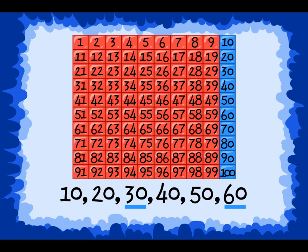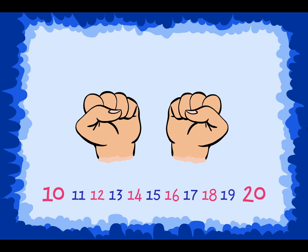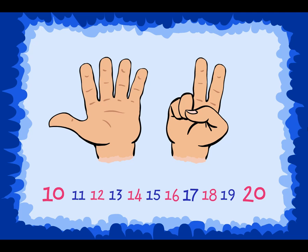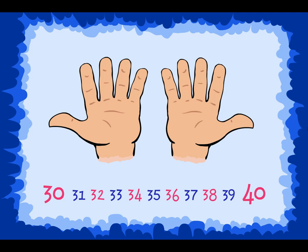When we count by 10's, we skip 10 from the previous number. For example, there are 10 numbers between 10 and 20. Count along with your fingers as I start at 11 and count to 20: 11, 12, 13, 14, 15, 16, 17, 18, 19, 20. You should have 10 fingers up right now. This shows you that there are 10 numbers between 10 and 20, between 20 and 30, between 30 and 40, and so on. Once you know this, you can count by 10's. Can you keep counting by 10's?